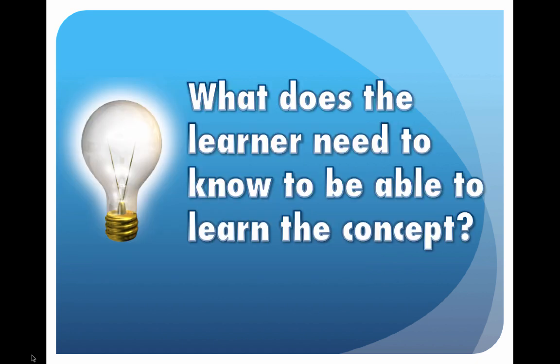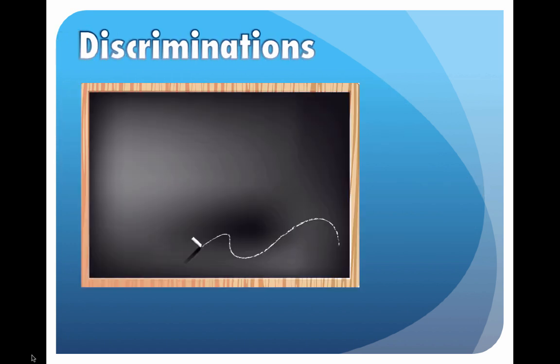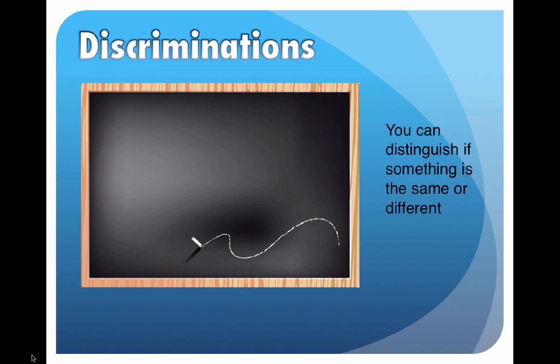What does the learner need to know to be able to learn the concept? These are the smallest building blocks — they're called discriminations. You can distinguish if something is the same or different. For example, a child first learning numbers, or someone learning a new alphabet, might have trouble distinguishing a 2 and a 5 — both have straight and curved lines. To do a math problem properly, you have to be able to discriminate among these different things to put them in the correct order.